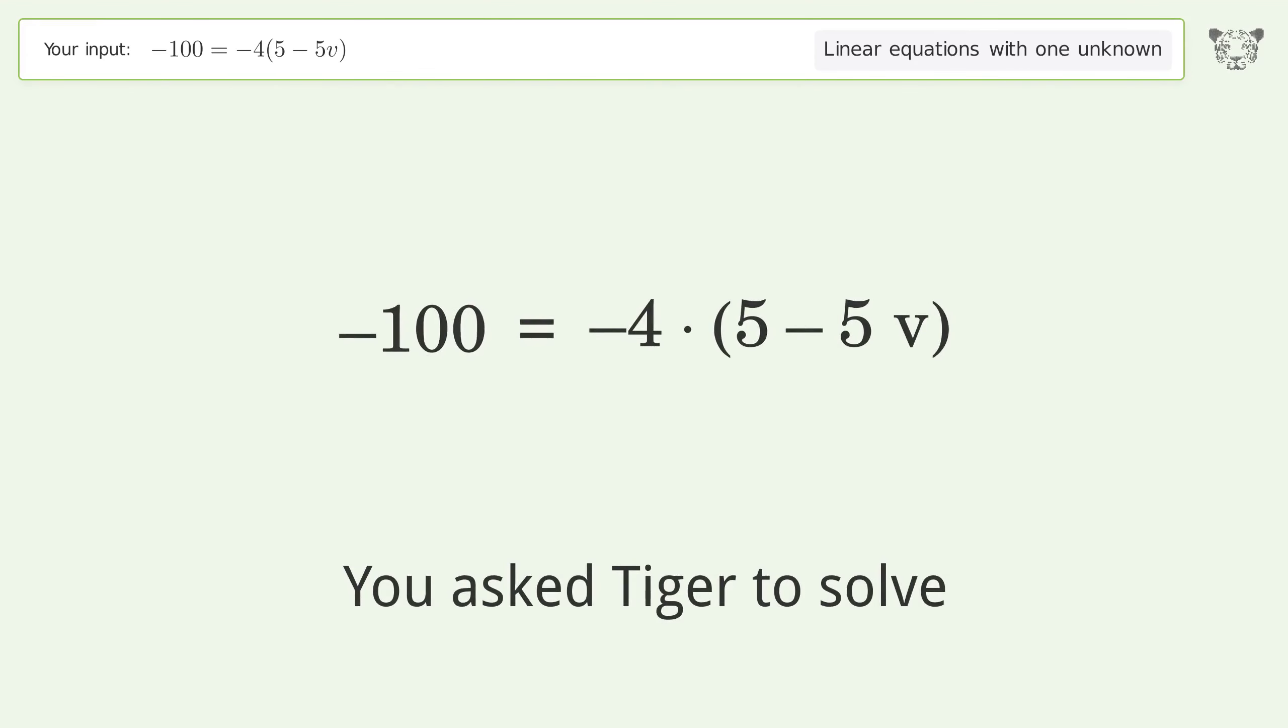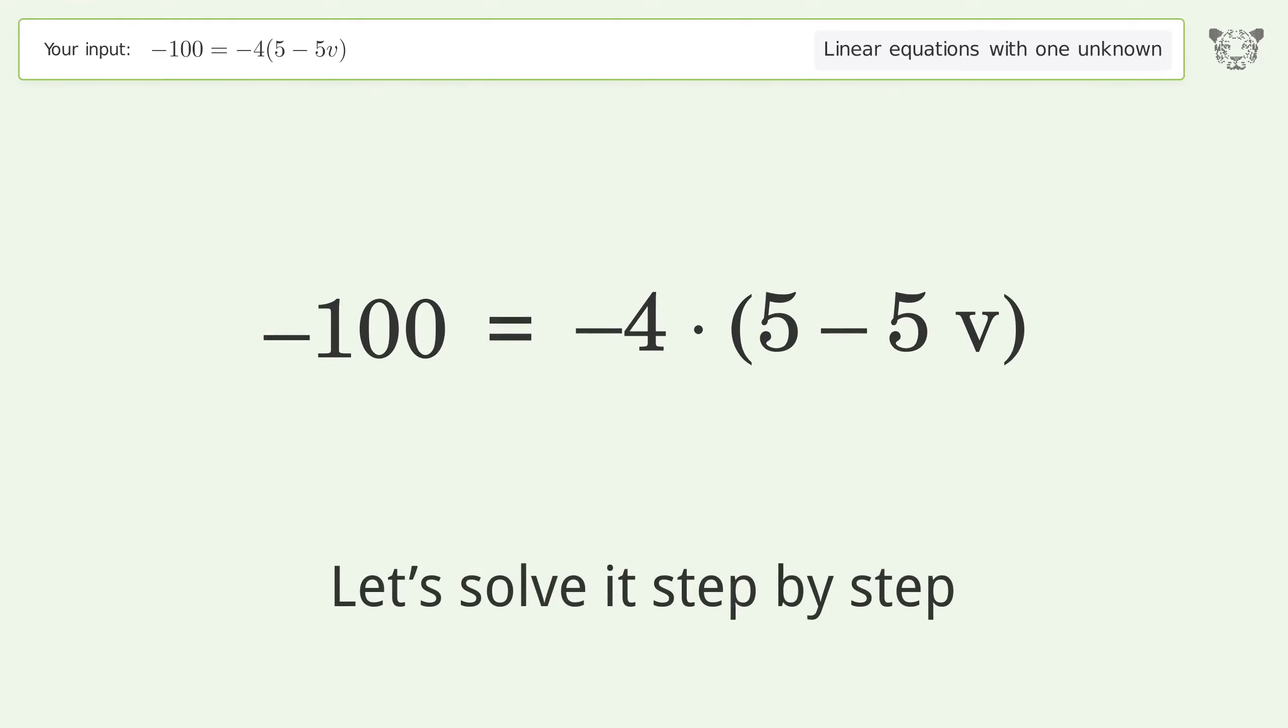You asked to solve this problem which deals with linear equations with one unknown. The final result is v equals negative 4. Let's solve it step by step. Simplify the expression.